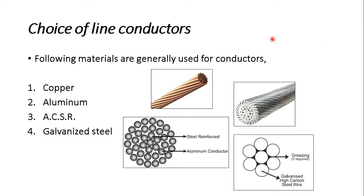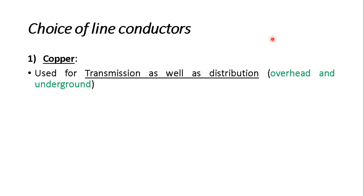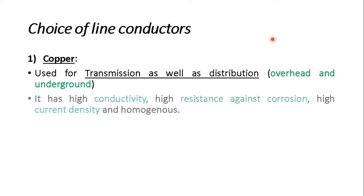Hard drawn bar copper, or HDBC, is the most widely used conductor material for transmission, distribution, overhead transmission lines, and underground cables. This is because its conductivity is very high. Copper also has high resistance against corrosion, high current density, and is a homogeneous material. These are the advantages of the copper conductor.